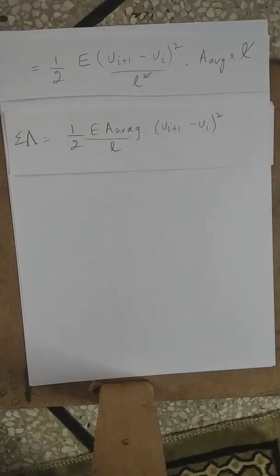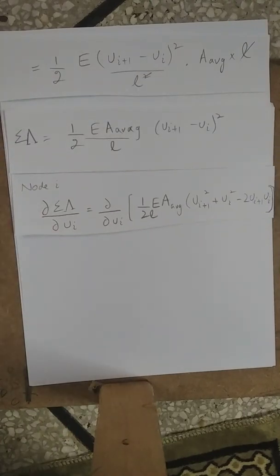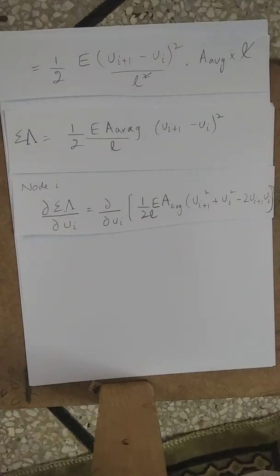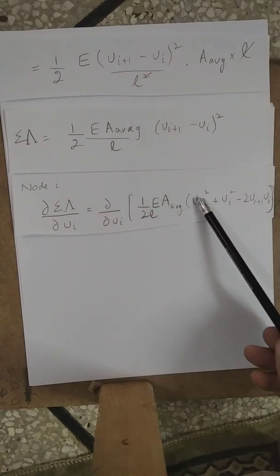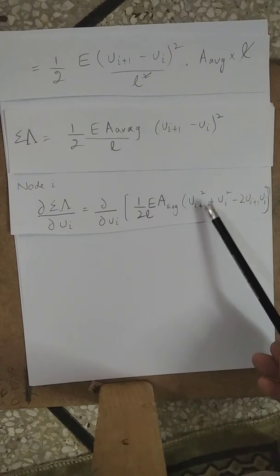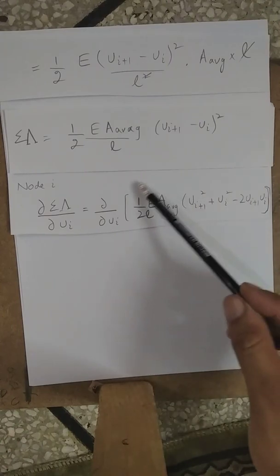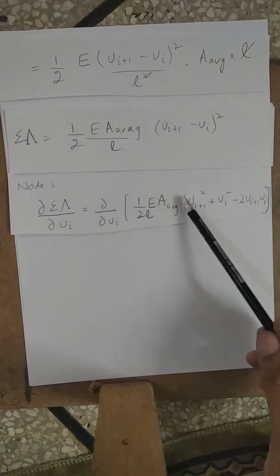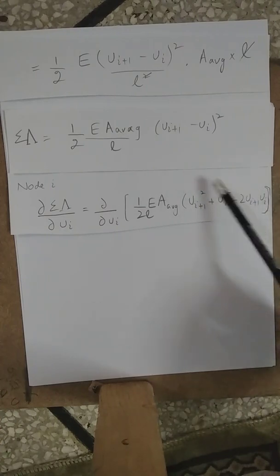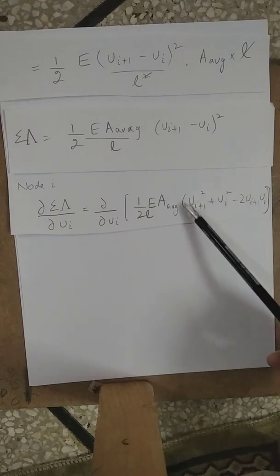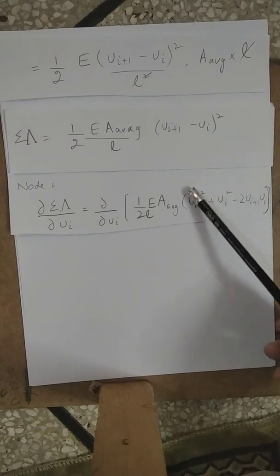Now we open the square term and take the derivative of the strain energy with respect to the displacement at node I. Expanding (U_{I+1} − U_I)² gives U_{I+1}² + U_I² − 2·U_{I+1}·U_I. The first term U_{I+1}² contains no U_I, so its derivative with respect to U_I is zero.